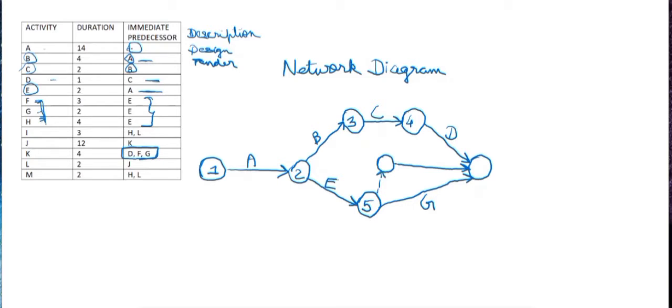And connect my activity F with my activity E. Now we'll give the numbering which is here 6 and here it is 7. And as we know that activity H also has its immediate predecessor activity as E, so one more arrow will come out from this node 5 which is for activity H.